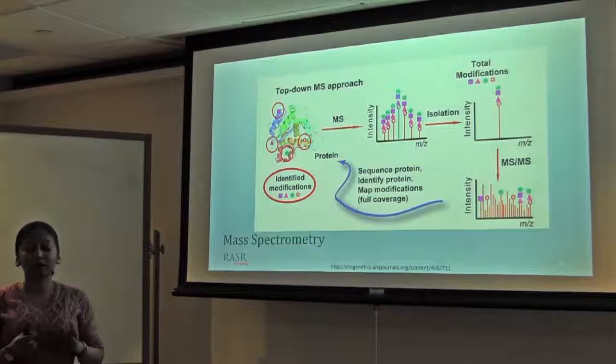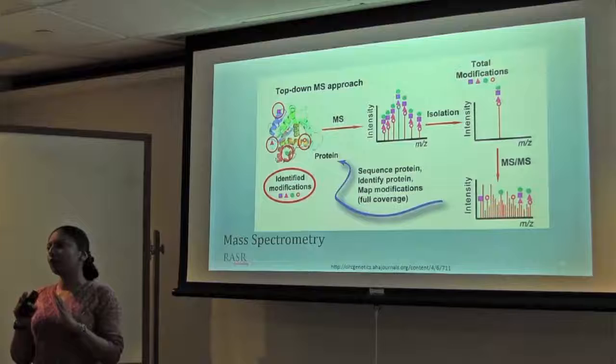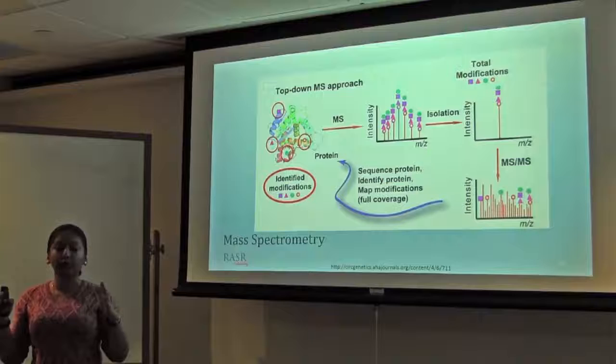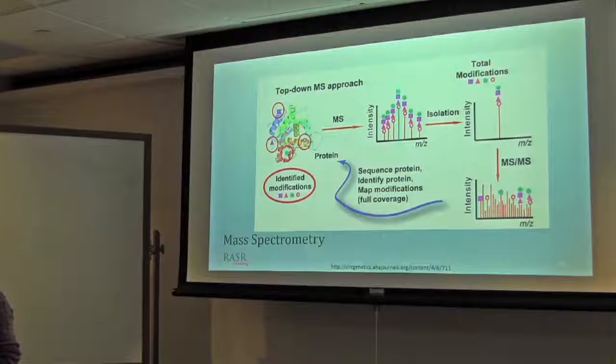Then you can look for the protein peak which contains most of the modification. You are going to fragment it, and the benefit is you are going to have the whole sequence coverage. N-terminal you will detect, C-terminal you will detect, and all isoforms and modifications you will detect. However, with complex mixture, you cannot follow this approach.